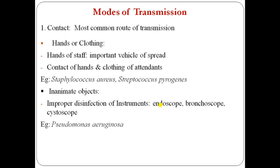Inanimate objects can also be a source — improper disinfection of instruments such as endoscopes, bronchoscopes, and cystoscopes. If these instruments are not properly disinfected or sterilized, they can cause nosocomial infection.